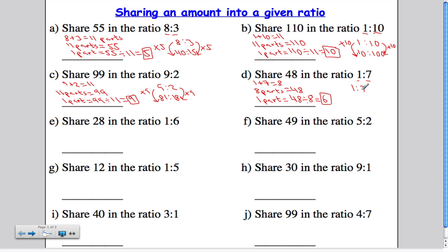Take your ratio and multiply both sides by 6. 1 times 6 is 6. And 7 times 6 is 42. So 48 shared in a ratio 1 to 7. One person gets 6 and the other gets 42. And that is how you share an amount into a given ratio.